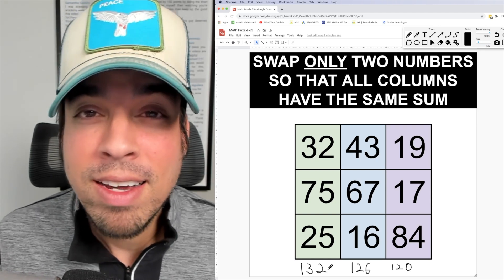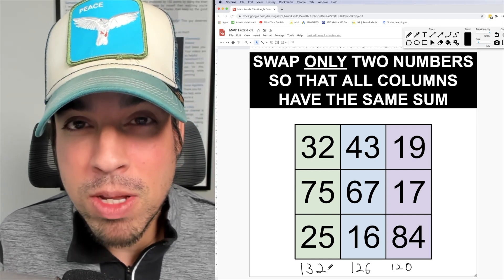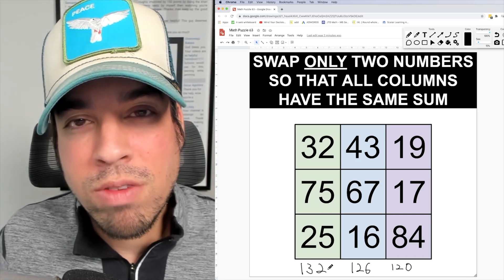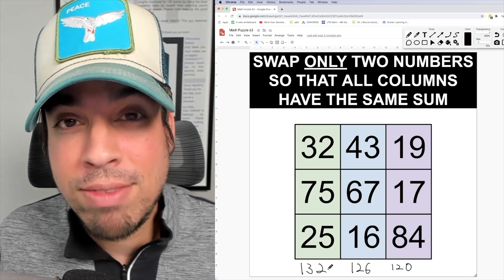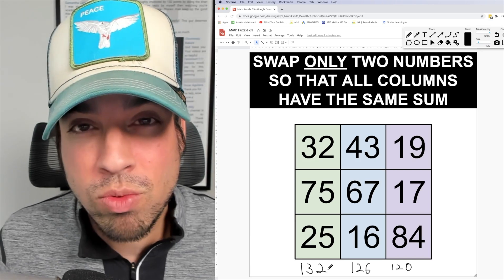What that tells me is that we're probably going to leave the middle value alone, the 126, because one of them is going to have to come up and one of them is going to have to go down because we're swapping two numbers.